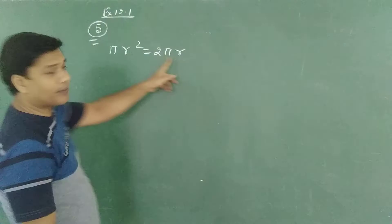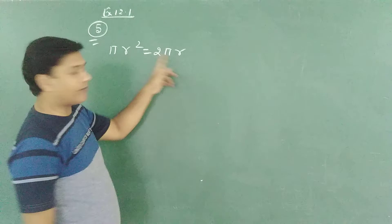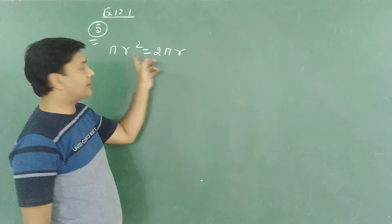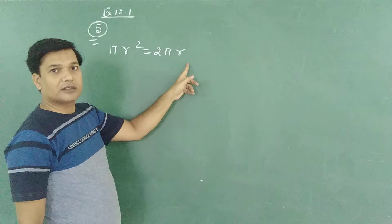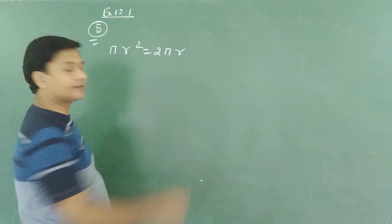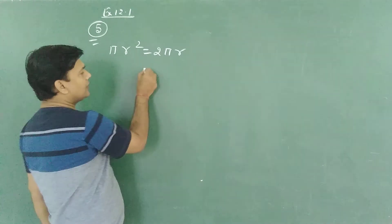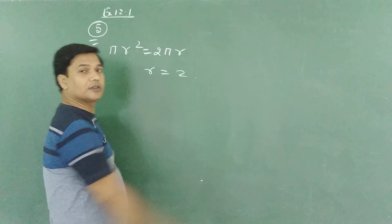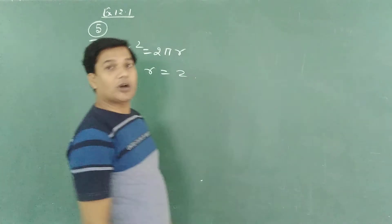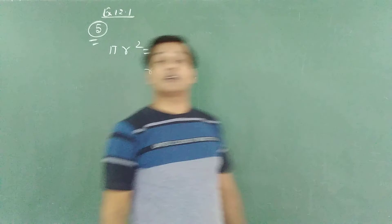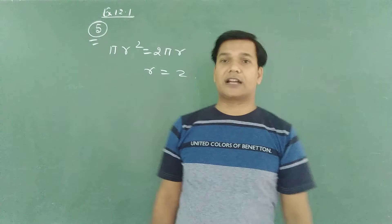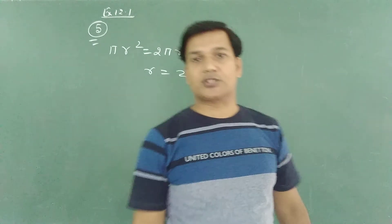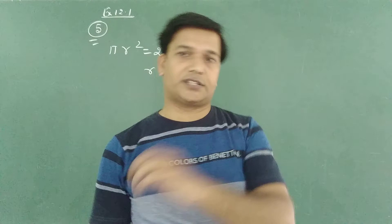Pi cancels with pi and one r cancels with one r. The remaining parts are r and 2. So the radius of that circle is 2 units.